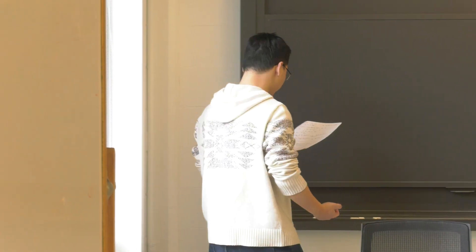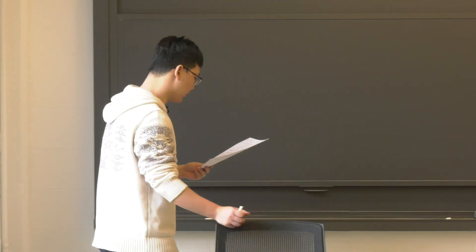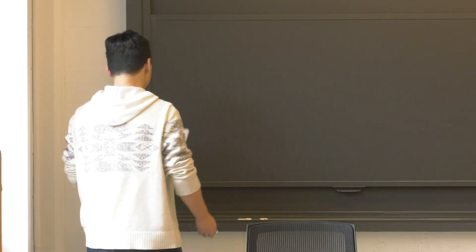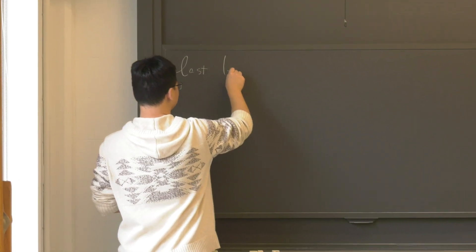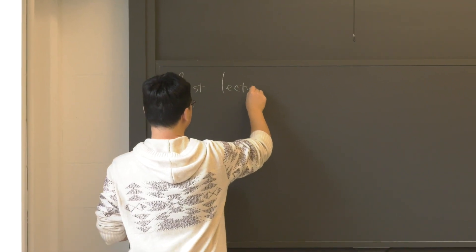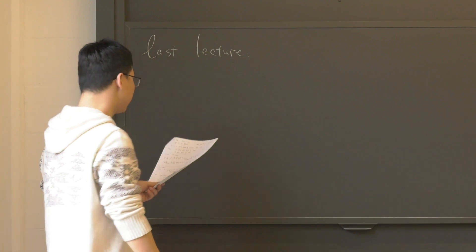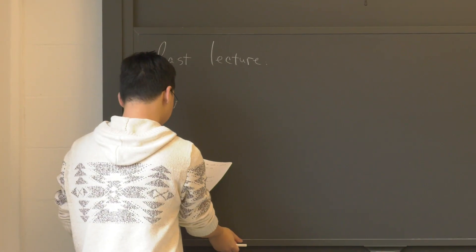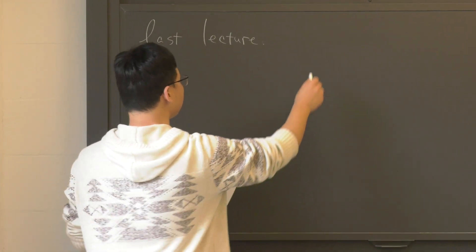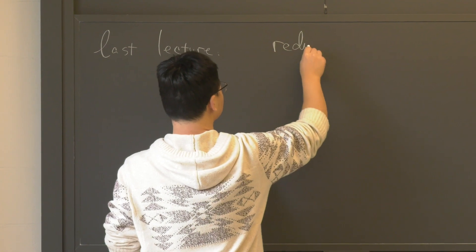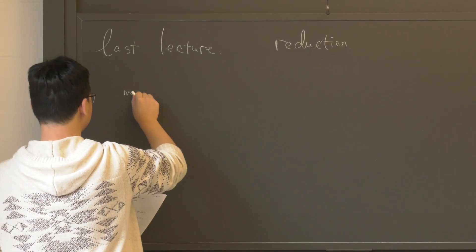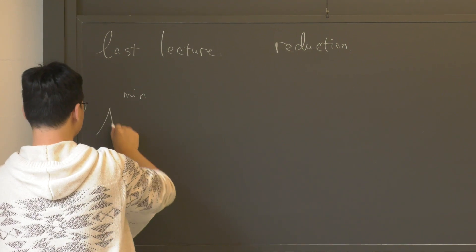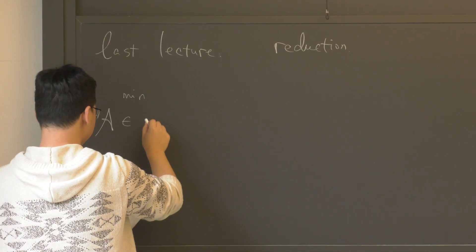So maybe let's start. Today we will continue talking about the lower bound for reinforcement learning. In the last lecture, let's first recap a bit of what we have been talking about. The general strategy to develop a lower bound is we perform this reduction, where we reduce the lower bounds for any randomized algorithm.